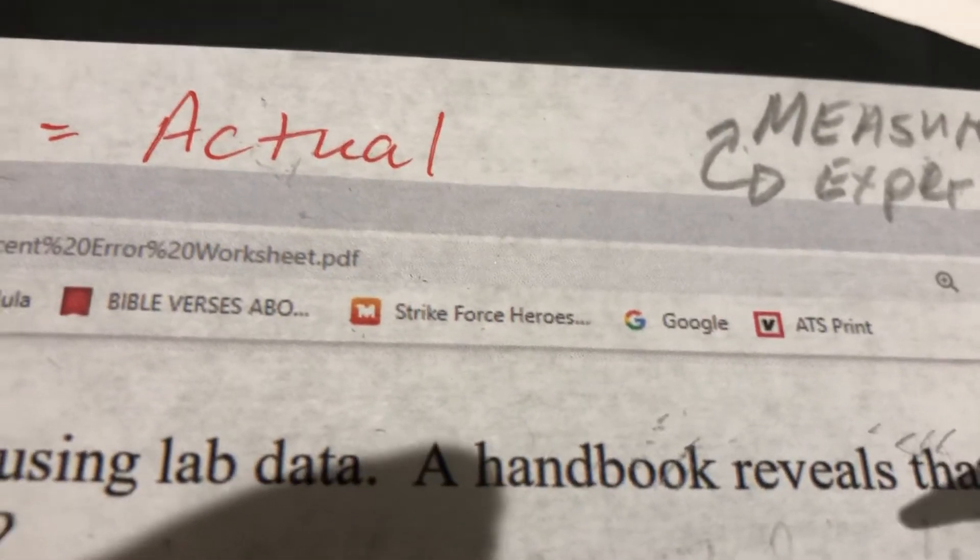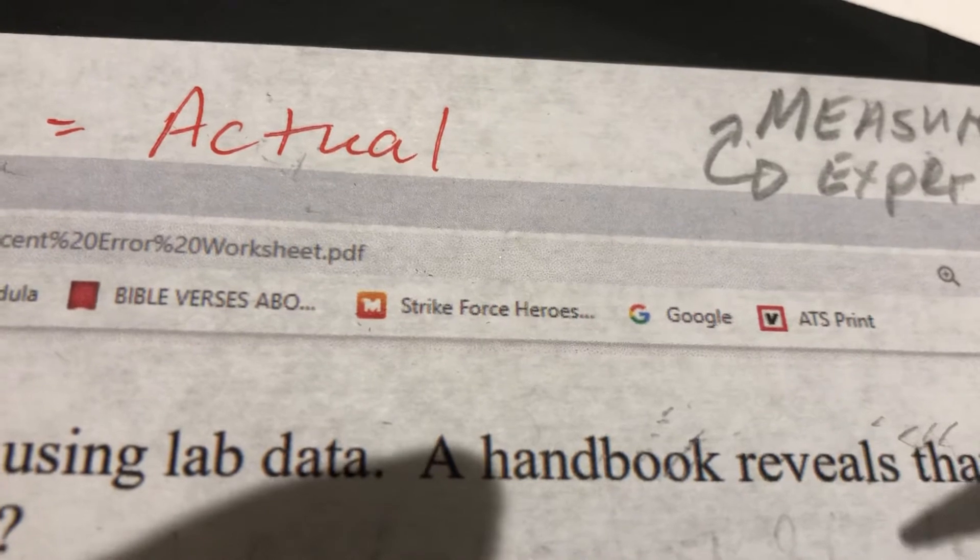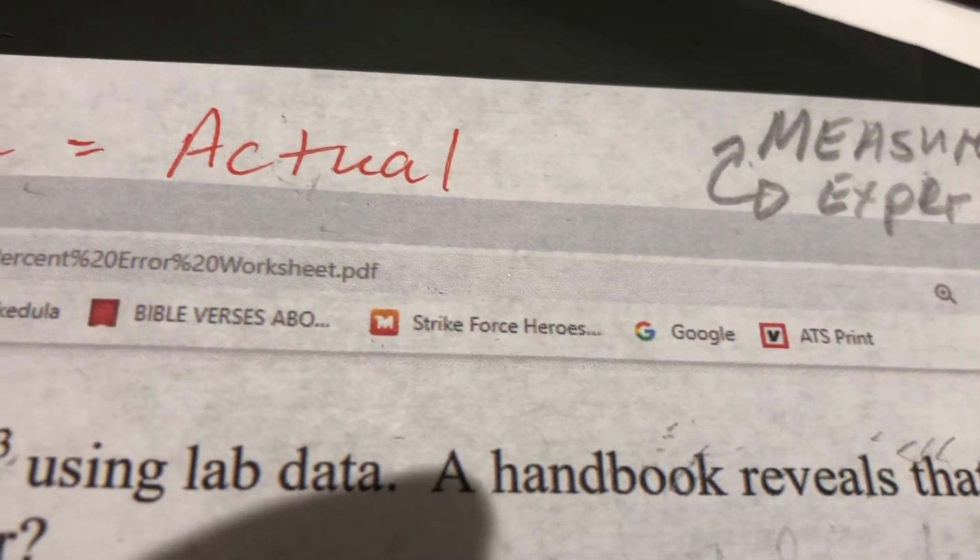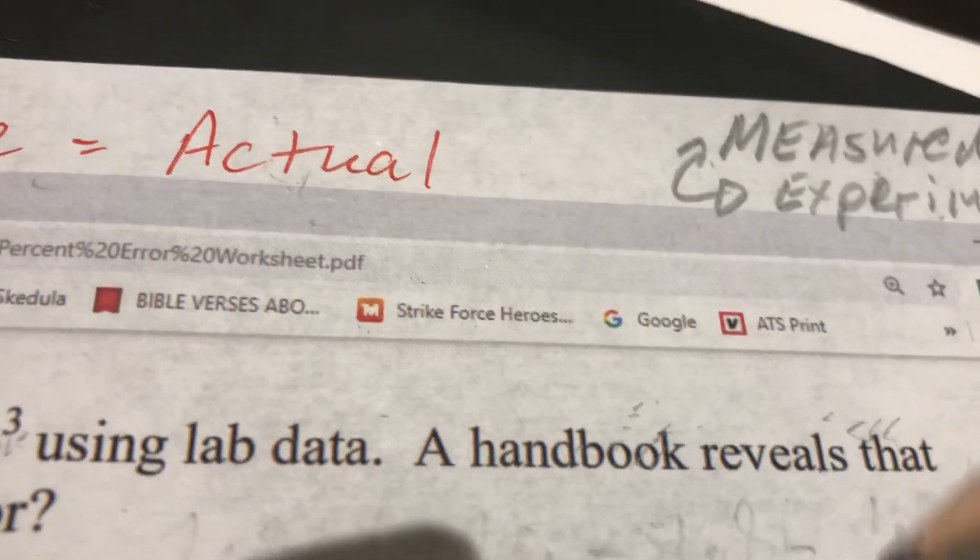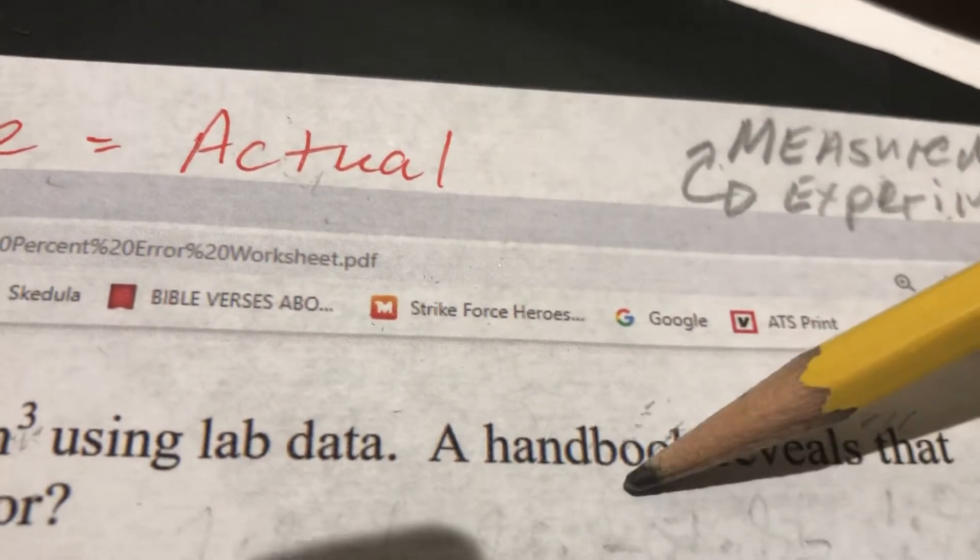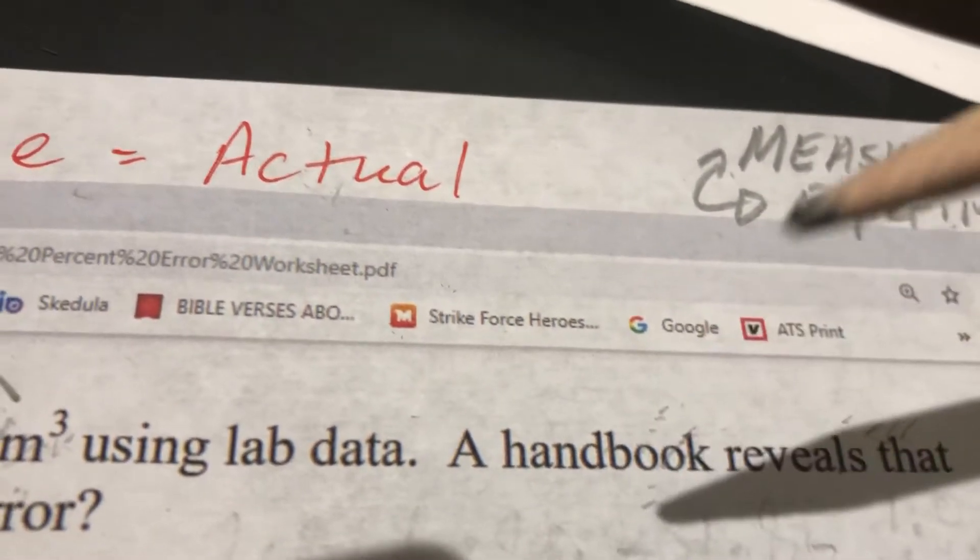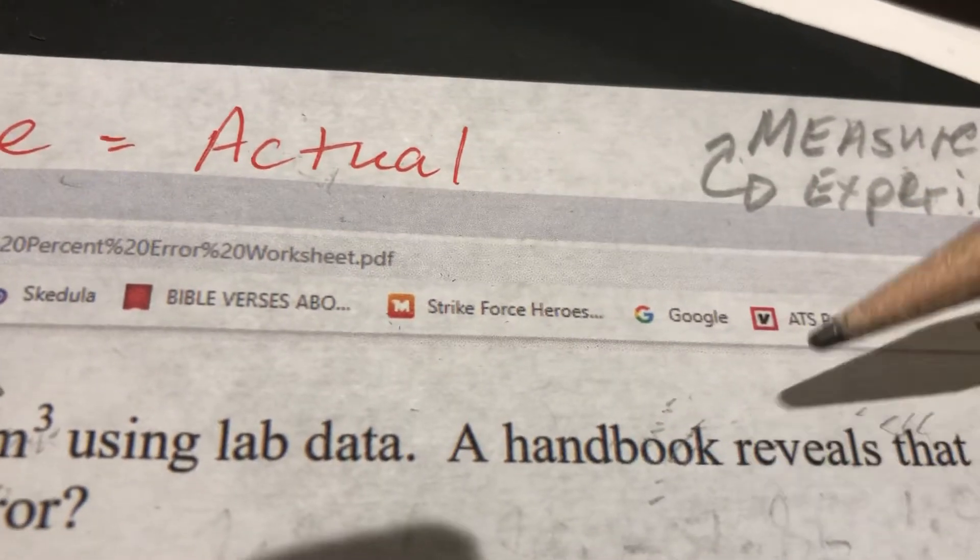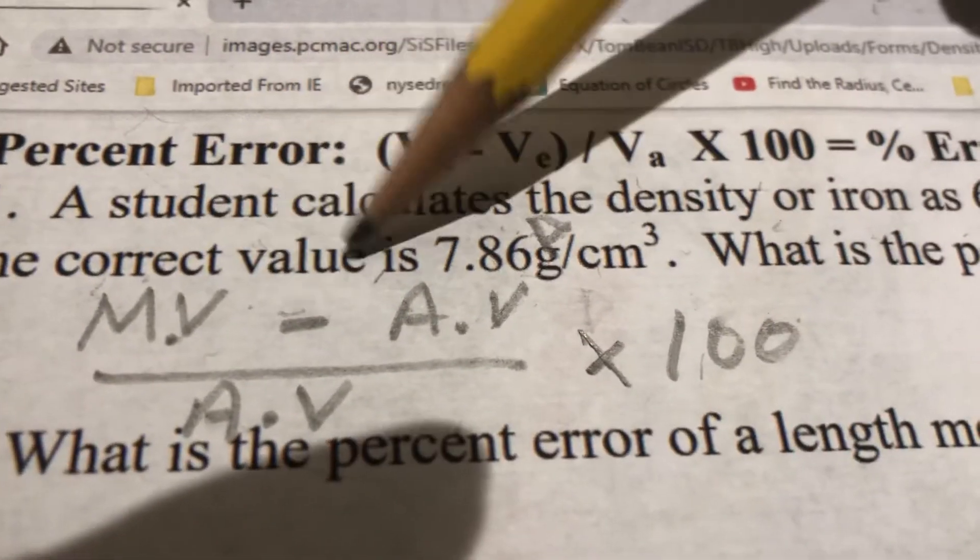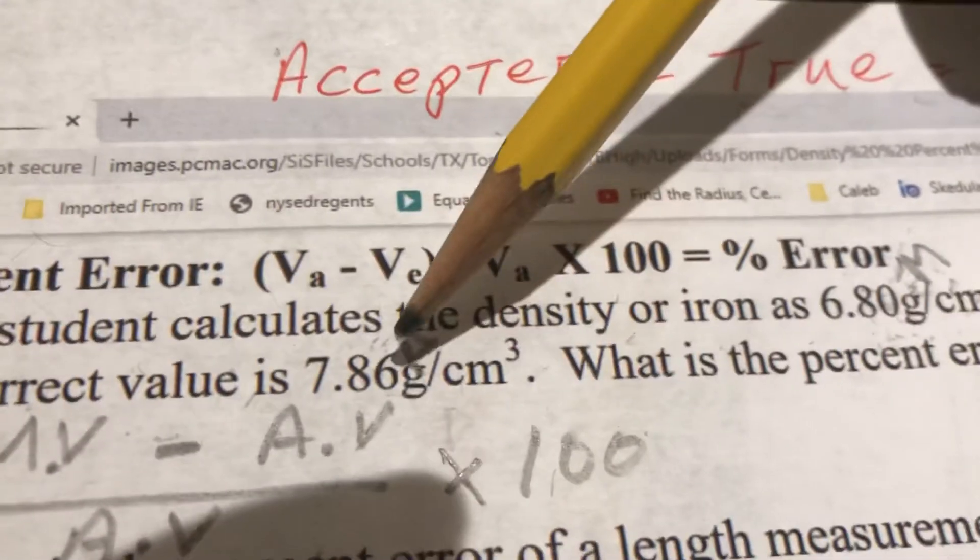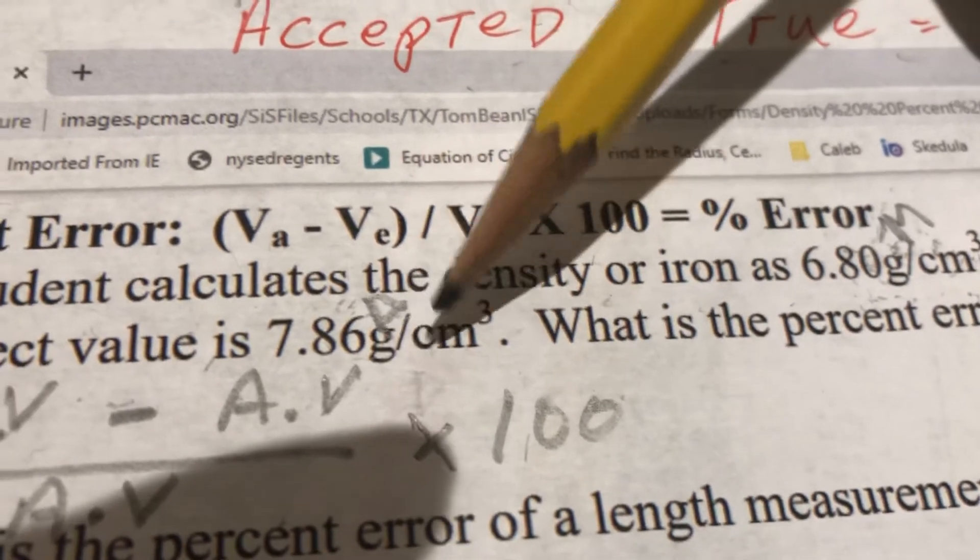Now, sometimes the handbook, the professor gives you the handbook information or a teacher gives you handbook information or get it from the internet or whatever, but the real value is normally unknown to you when you're doing an experiment, especially in college for your grade. You don't know it beforehand. So a handbook reveals that the correct value is 7.86 grams per centimeter cubed.